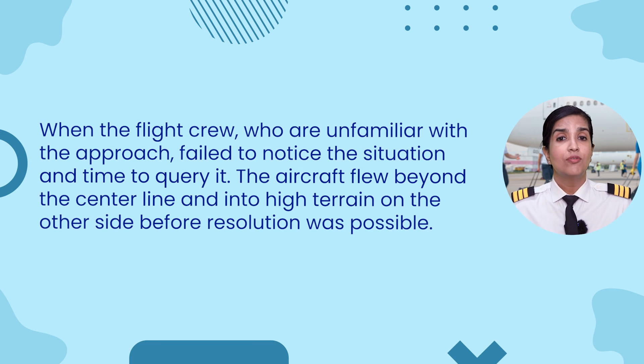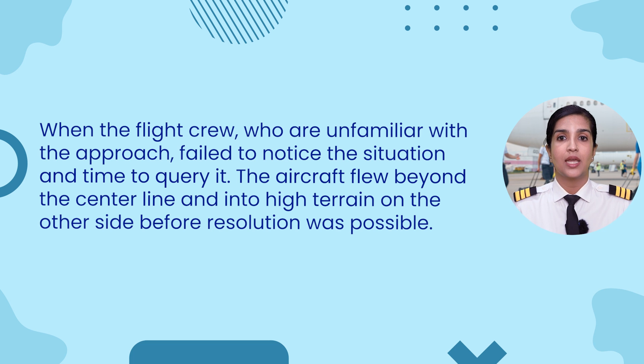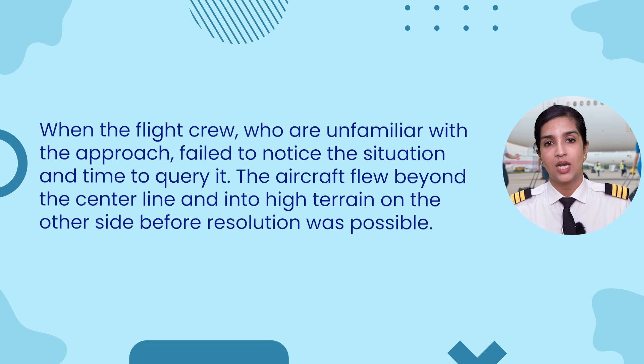Next is the ATCO-induced situation. The controller gave the aircraft, which was still at 210 knots, an intermediate heading towards the ILS centerline during a radar-vectored initial approach, but was subsequently distracted and failed to issue the intercept heading for the ILS localizer. When the flight crew, who were unfamiliar with the approach, failed to notice the situation in time to query it, the aircraft flew beyond the centerline and into high terrain on the other side before resolution was possible.